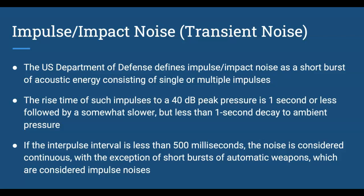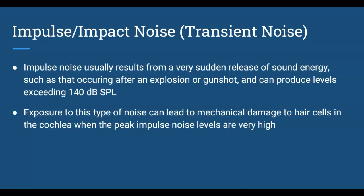Impulse or impact noise consists of a short burst or multiple short bursts of noise. If the interpulse interval is less than 500 milliseconds, the noise is considered continuous. Impulse noise usually results from a very sudden release of energy — like a gunshot or explosion — and can exceed 140 dB, the point at which pain is common. Because it is so sudden and impactful, it can cause mechanical damage to the hair cells and cochlea, often resulting in permanent threshold shift.